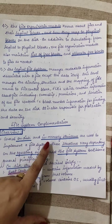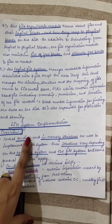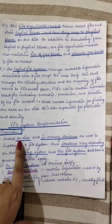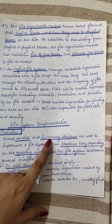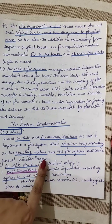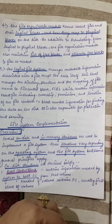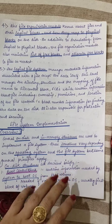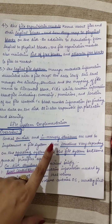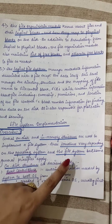Implementing the file system needs certain structures. We have several on-disk and several in-memory structures used to implement the file system. There will be certain structures which need secondary storage, and there will be structures maintained in main memory. On-disk structures will be taken care of by secondary storage and in-memory structures will be taken care of by main memory. These structures vary depending on the operating system and the file system, but some general principles apply.